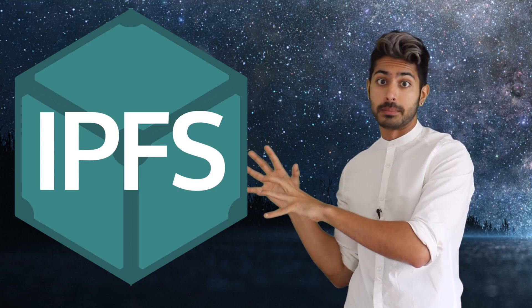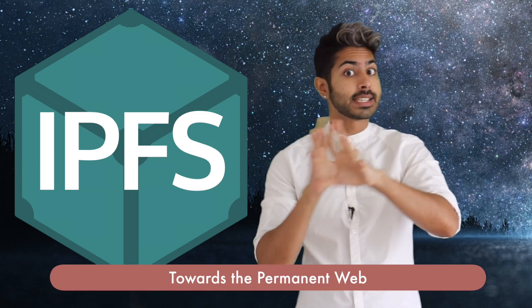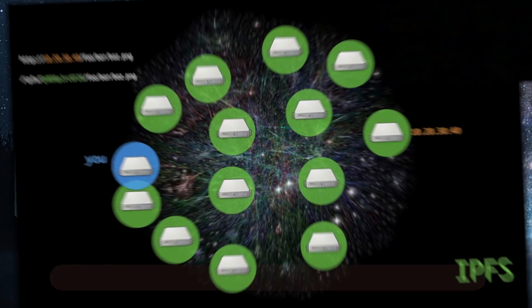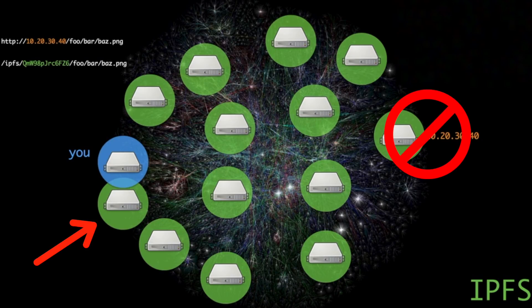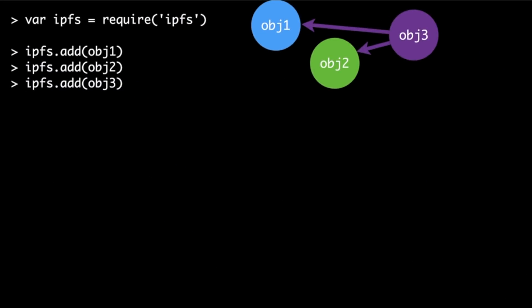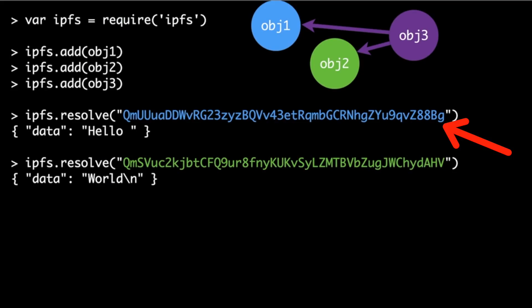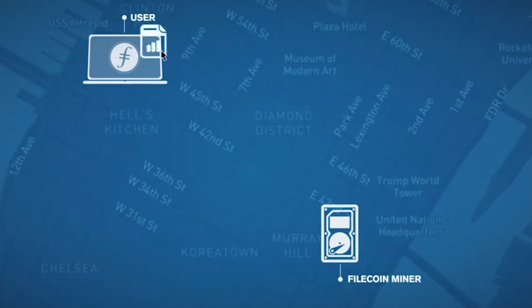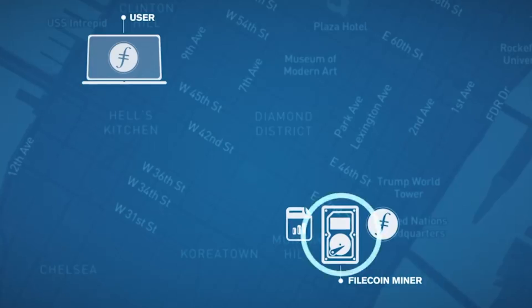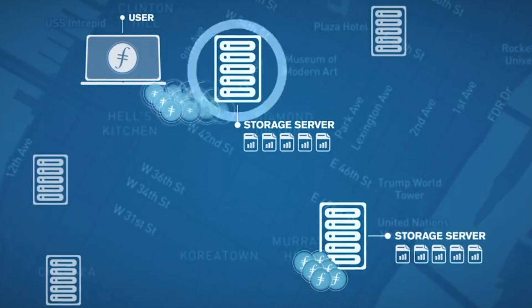IPFS was designed to help fix these problems and help us move towards the permanent web — a web where links never die and no entity controls your data. While the HTTP web is IP addressed, the IPFS web is content addressed. When requesting data from a content address, you'll receive it faster, since it'll route from whoever owns a copy of that content address closest to you. This helps make bandwidth usage much more efficient. When you upload a file to IPFS, you get back its immutable hash. Each file in the network is identified by its content using this hash. The hash is cryptographically guaranteed to represent only that file. Anyone can provide storage for IPFS data. These storage providers are incentivized with a crypto token, and data is replicated and chunked across all of them by the network to maintain data permanence.